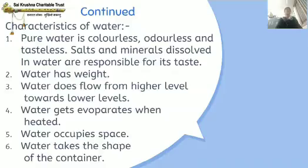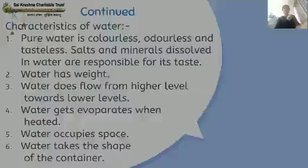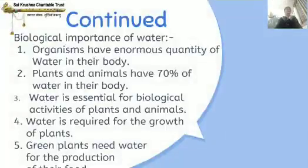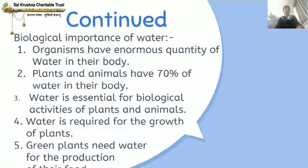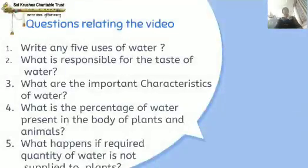Water has weight. Water flows from a higher level towards lower levels. Water gets evaporated when heated. Water occupies space and takes the shape of the container. Water is essential for the biological activities of plants and animals. Water is required for the growth of plants, and green plants need water for the production of their food. I think you have understood the uses of water, the characteristics of water, and the biological importance of water.